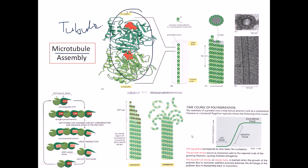The tubulin protein is made up of one dimer, which consists of two monomers - one beta tubulin and one alpha tubulin. The beta tubulin and alpha tubulin are attached to each other, and they have a binding site for ATP.